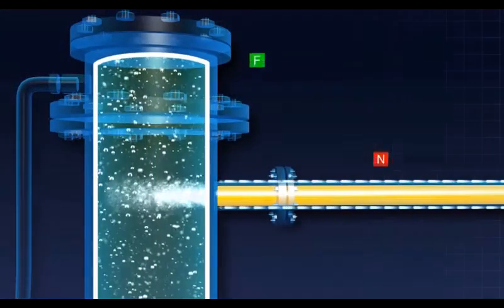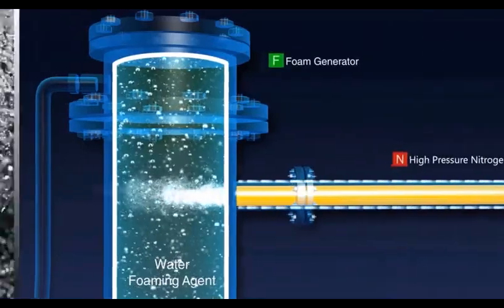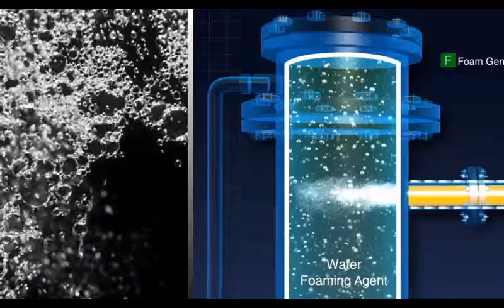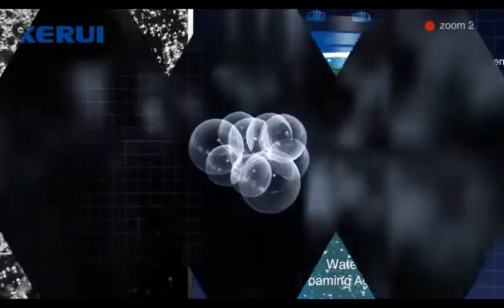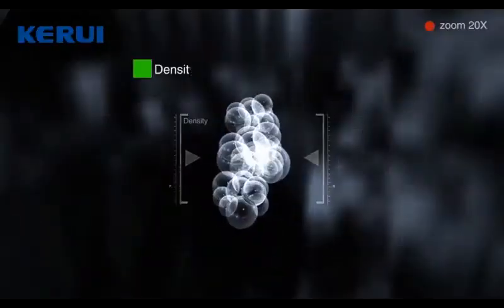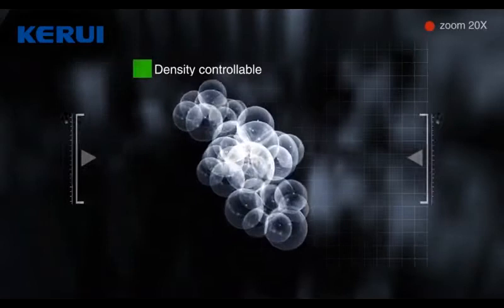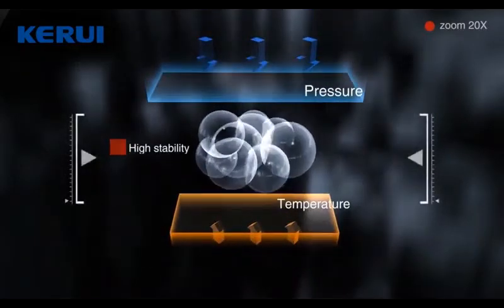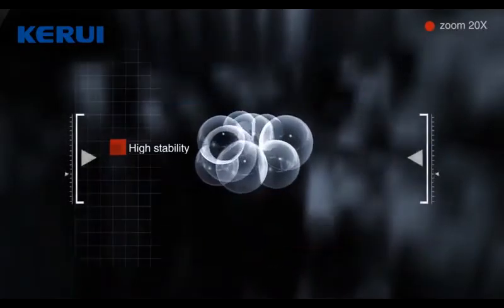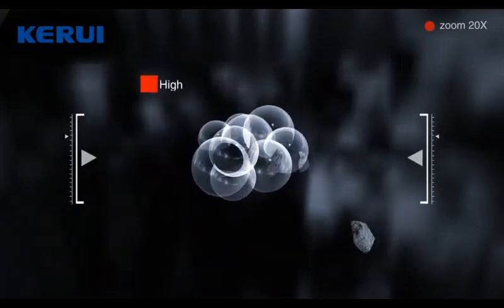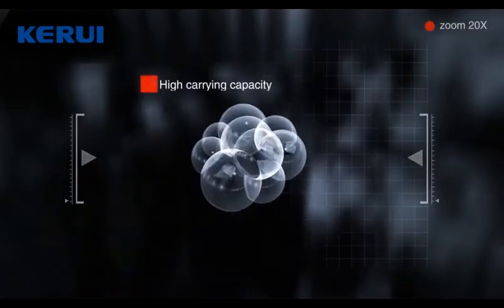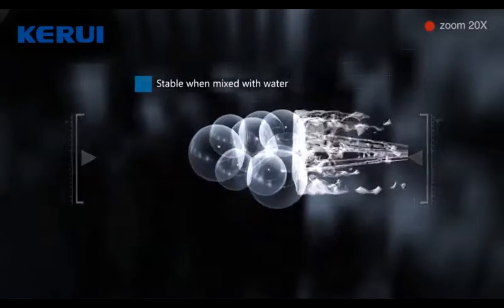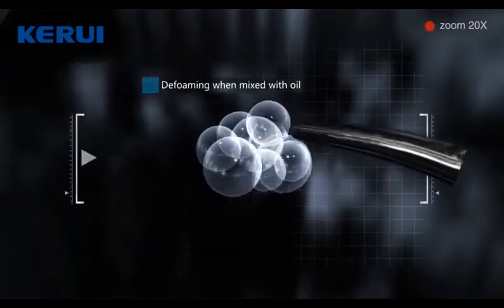Nitrogen foam liquid is featured with adjustable density, high stability, and is little affected by normal temperature and pressure changes. It has high viscosity, good cutting and transportation capability, and shear thinning properties. Foam more easily plugs high permeability layers than lower permeability vents. Foam decomposes when mixed with oil and remains stable with water, making it easier to plug water zones than oil zones.